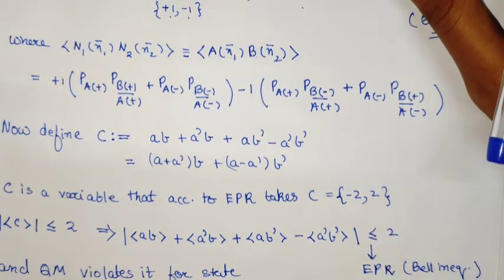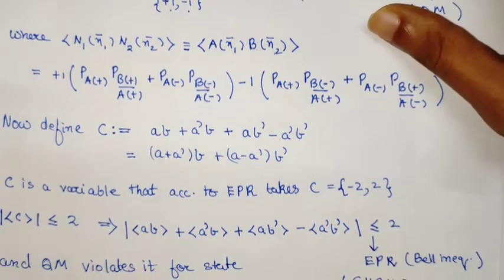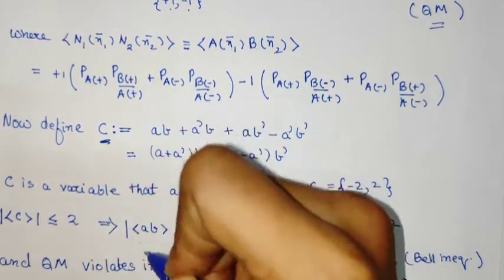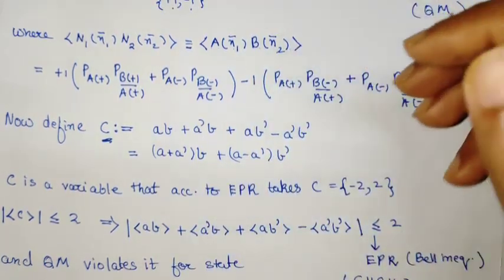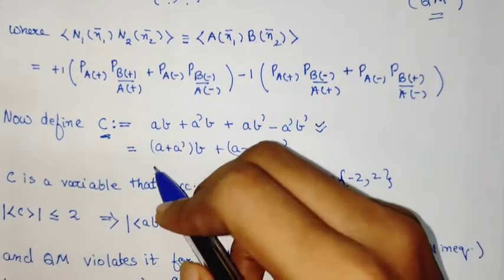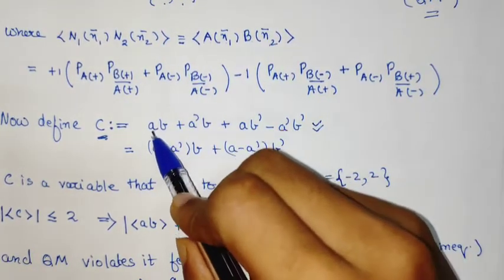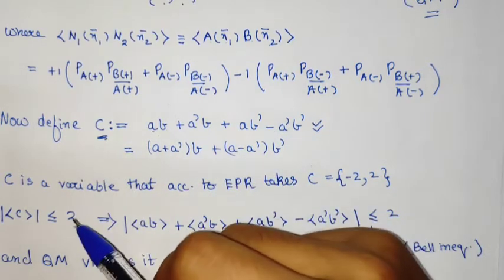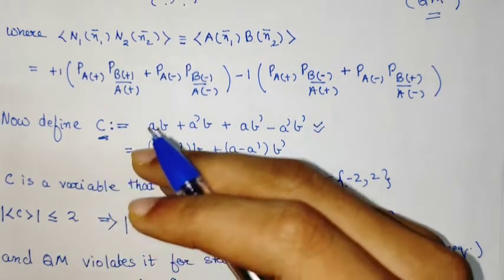We define a new variable C in this particular fashion. Here it is important to remember that a, b, a', b' are the values of spin, not the vectors. They are the values of spin along the axes a, b, a', b'.